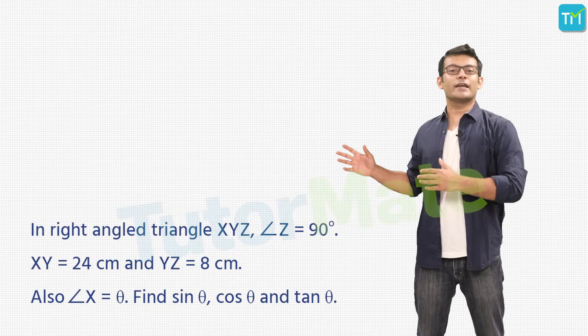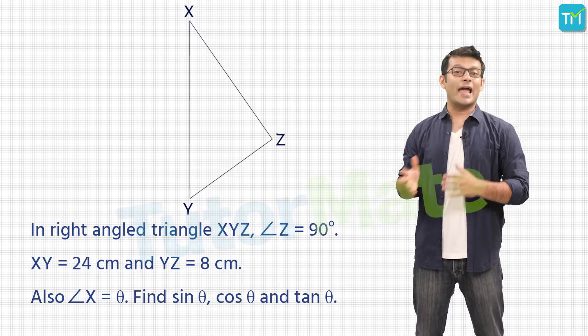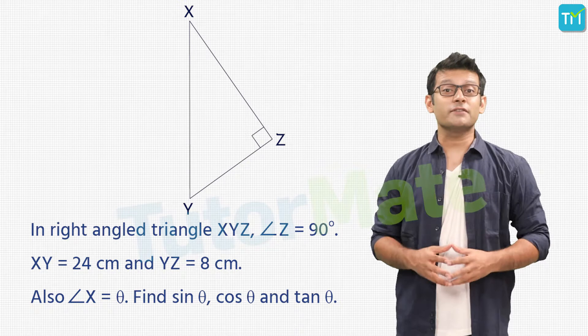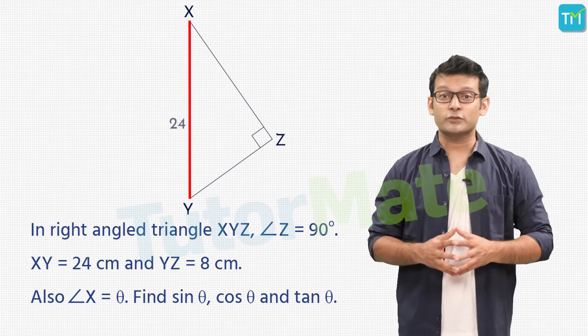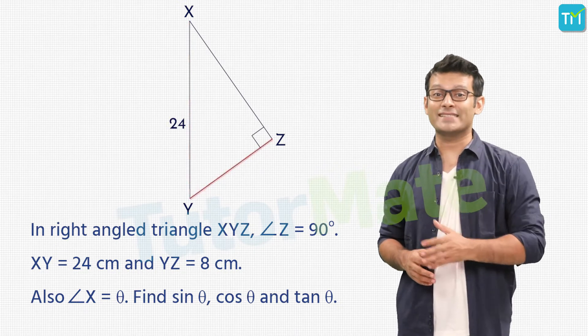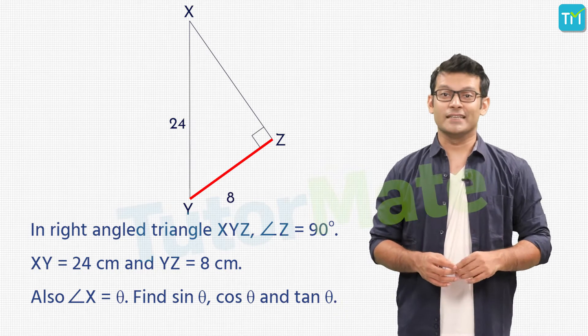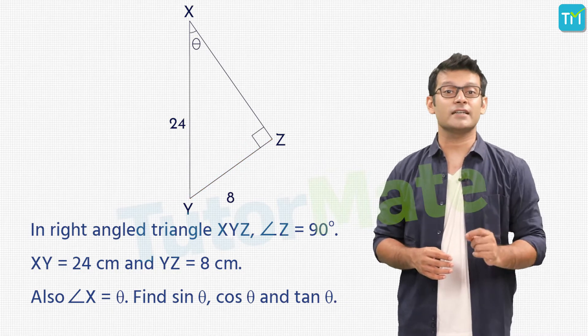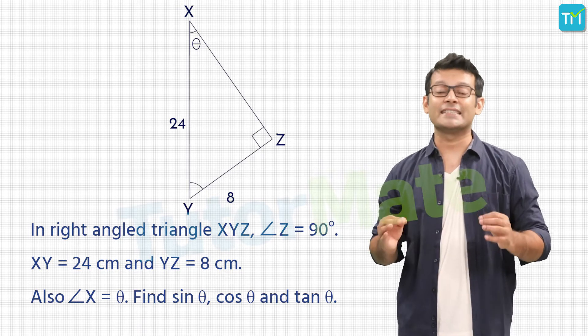Here we have right angle triangle XYZ where angle Z is equal to 90 degrees. Also, we are given the length of XY as 24 centimeters and the length of YZ as 8 centimeters. The angle X is θ and we have to find sin θ, cos θ, and tan θ.